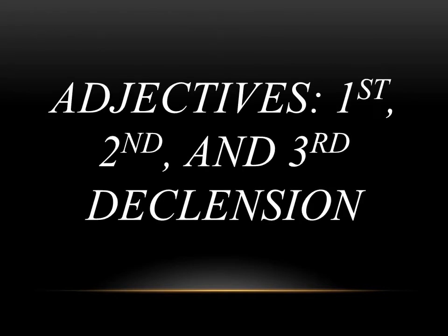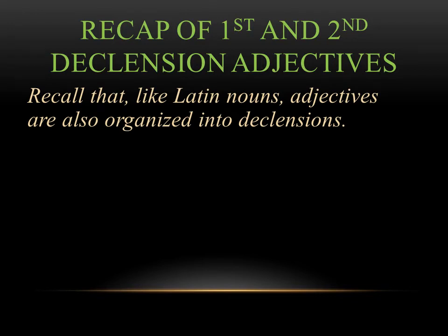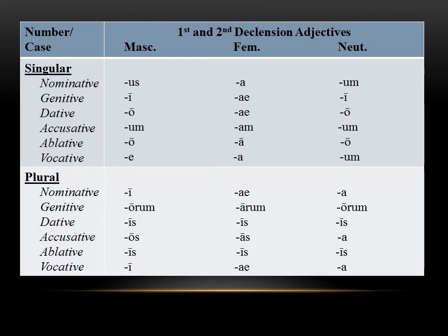This brings us to the grammar for Chapter 18. What we're looking at in this chapter is adjectives again, and specifically we're coming back to first and second declension adjectives, which you've already seen, and we're adding in the third declension. You want to think back to what we've learned for adjective endings, because we're going to be adding to that in this video. Just like Latin nouns, we use adjectives and organize them into declensions, which is just another name for a grouping of words. Since many adjectives follow the same pattern as first and second declension nouns, we call those first and second declension adjectives.